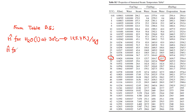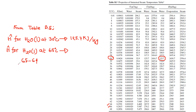Enthalpy for water liquid at 65 degrees Celsius — we need to do interpolation for 65 degrees Celsius, between 64 and 66.